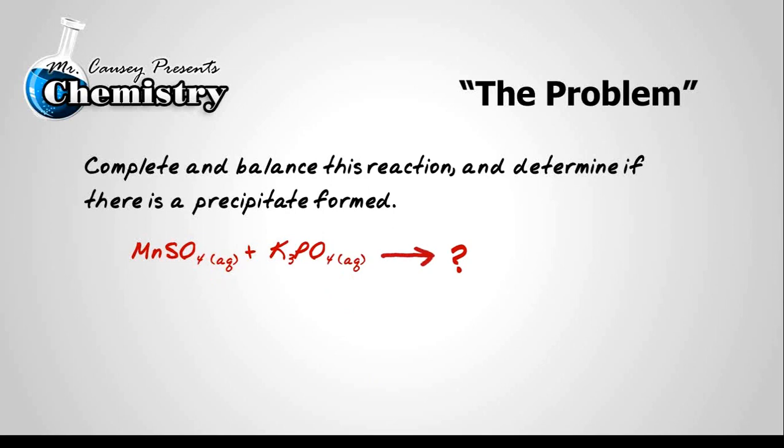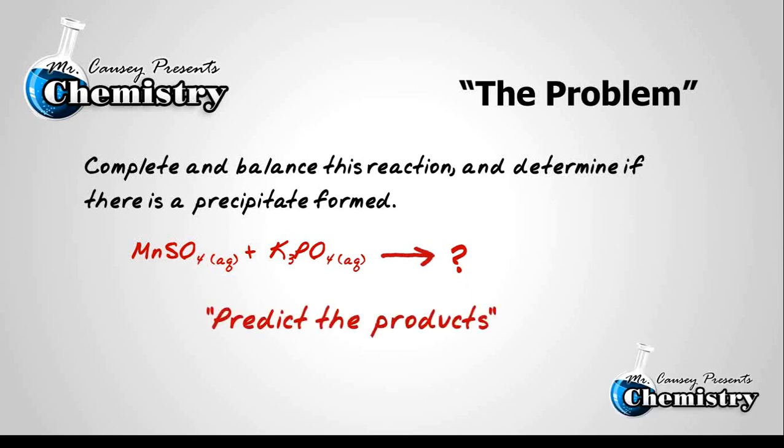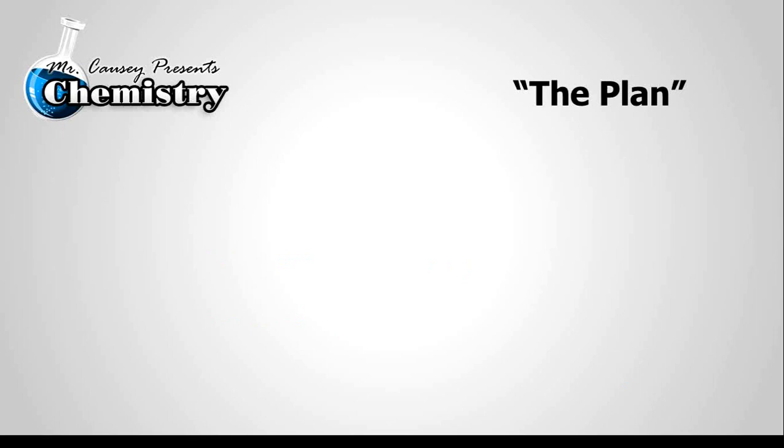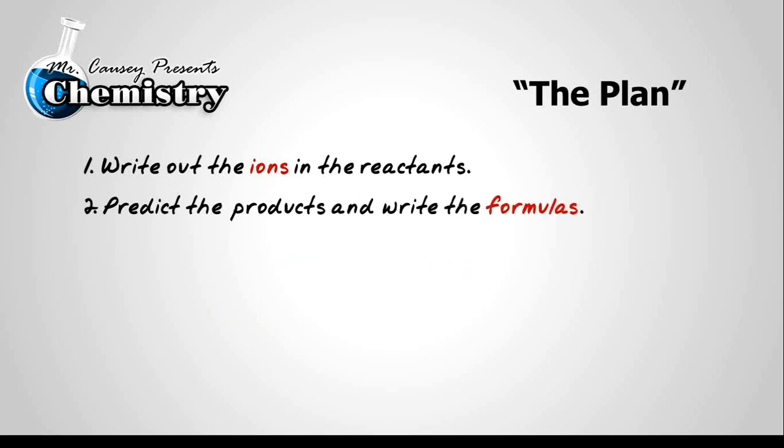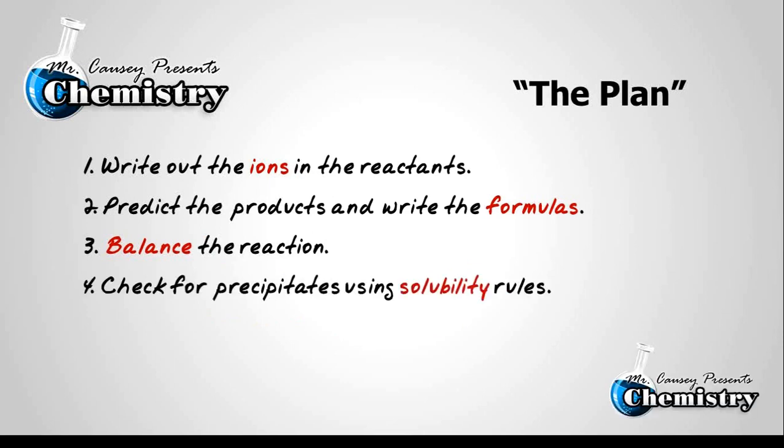We need to check and see what products they're going to make, then balance it and see if a precipitate was produced. So first thing we want to do is predict our products and produce a plan. One, let's write out the ions in the reactants. Two, let's predict the products and write the formulas. Three, we'll balance the reaction. And then four, we'll check for the precipitates using the solubility rules.